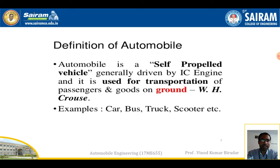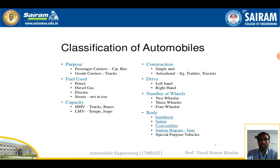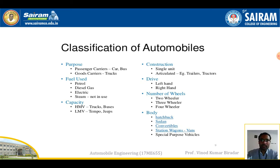Examples of automobiles include cars, buses, trucks, and scooters. Automobiles can be classified based on different purposes and uses. The first classification is based on purpose, which can be divided into two: passenger cars and goods carriers. Passenger cars include cars and buses; goods carriers include trucks.